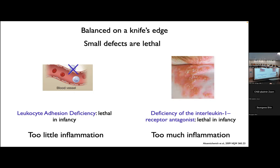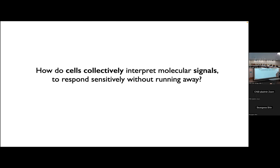On the other hand, you can also knock out one of several repressors of an important cytokine called IL-1B, which is one of these molecules that starts off inflammatory processes. If you're missing one of the repressors of this protein, this is also lethal in infancy — these individuals have rampant skin and bone auto-inflammation. So we have a loose picture of a system that somehow appears to be hovering, ready to spike up and take care of something at any given time, but somehow kept under control. The broad question is how cells in our body collectively interpret molecular signals to respond sensitively without running away.